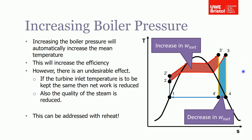So increasing boiler pressure alone is only mildly successful. One way to address this is with superheat — specifically, rather than passing the steam directly through the turbine, we put it through a second stage and increase the superheat using what's called a reheat cycle.